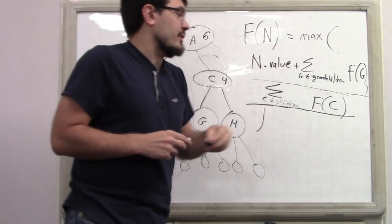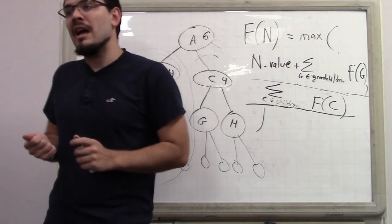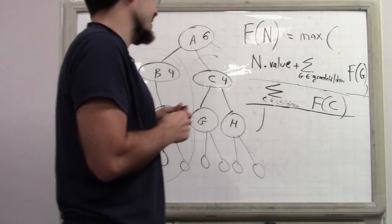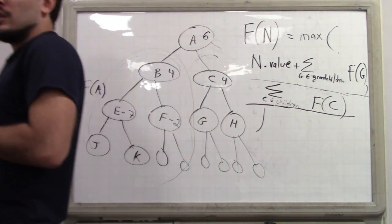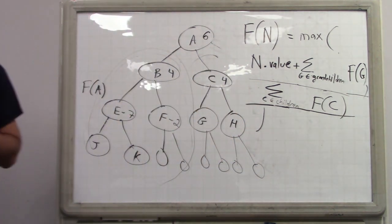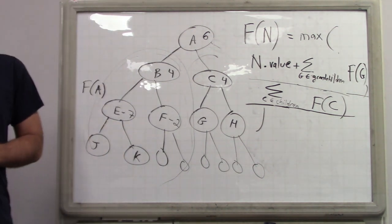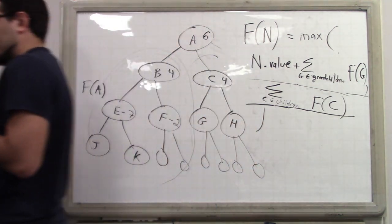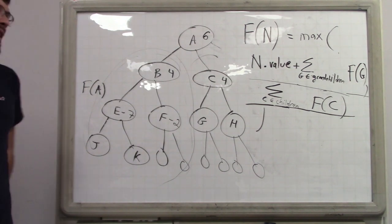That's also why you can sum the grandchildren independently. Two questions: what is the time complexity of this, and does dynamic programming actually help here? Would there be a problem if you solved this with just normal recursion? There's one clear argument for why you definitely need dynamic programming here.